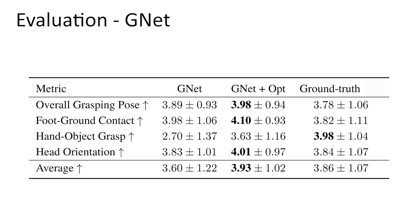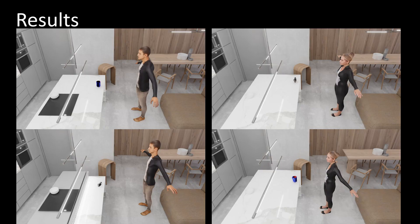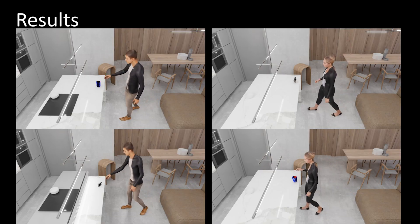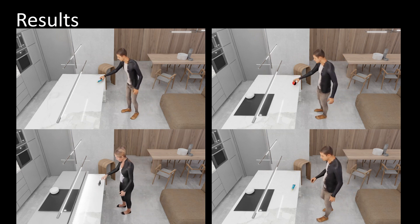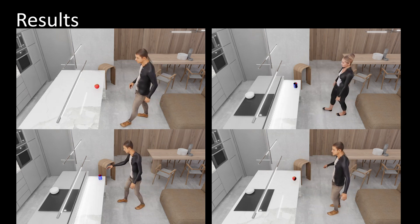Moreover, our experiments show that GNet's optimization-based post-processing improves the initial grasp. Overall, our experiments demonstrate that GOAL generalizes well to unseen objects and generates realistic grasping motions.